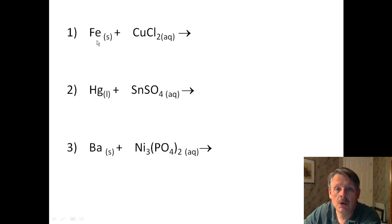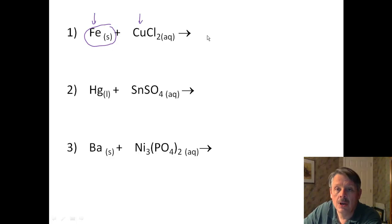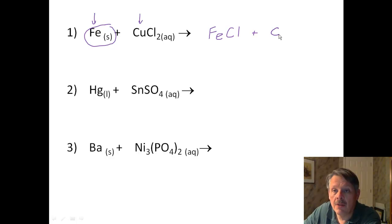Let's start with number one. We look at iron and copper, and we have to decide which one is more active. The one that is higher on the activity series is iron. So iron is going to replace the chlorine — the chlorine would rather be with the iron. So we have Fe and Cl, and the copper stands alone now because it has been replaced by the iron.